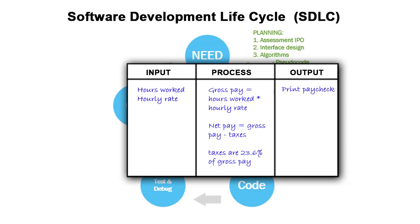We need to know how many hours they worked and what their hourly rate is. That'd be the input. The process then is we're going to calculate the gross pay as the hours worked times the hourly rate, then calculate the net pay as the gross pay minus the taxes. We'll say taxes are 23.6 percent of the gross pay.